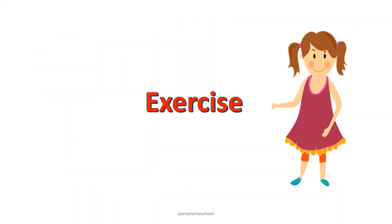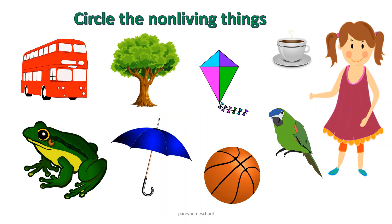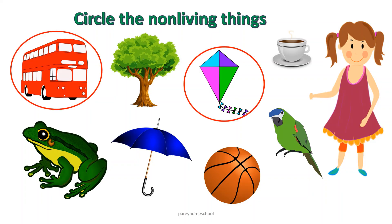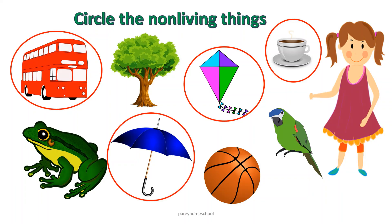So friends, today we have learned what are living things, what are non-living things, and what are their characteristics. Now we will solve a few exercises. Can you name the non-living things in this list? Bus, kite, cup and saucer, umbrella, and ball — these are non-living things.